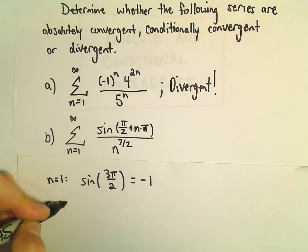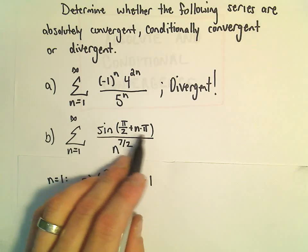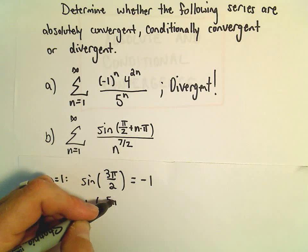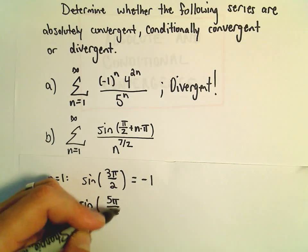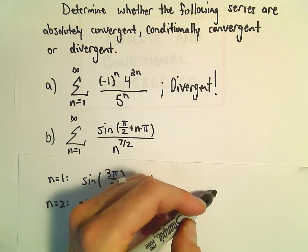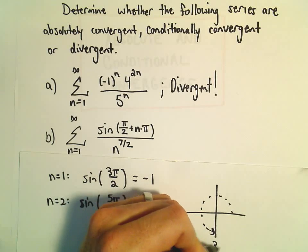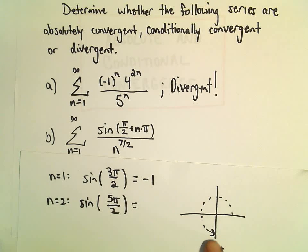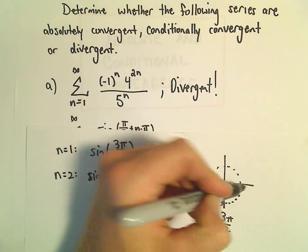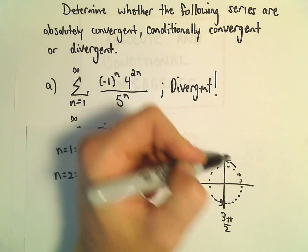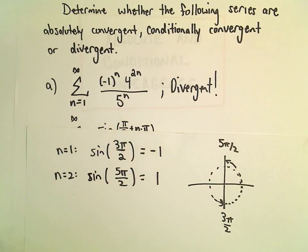If we plug in n equals 2 into the numerator, we'll get sine of pi over 2 plus 2 pi, which will be just sine of 5 pi over 2. So sine of 5 pi over 2 on the unit circle, 3 pi over 2 is at the bottom of the circle, so sine is negative 1 there. 5 pi over 2, that's 2 and a half pi. That's going to put us back at the top. And there, sine of 5 pi over 2 equals positive 1.